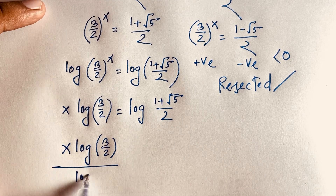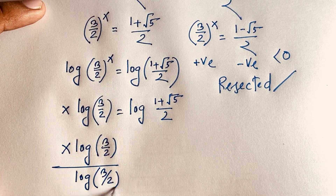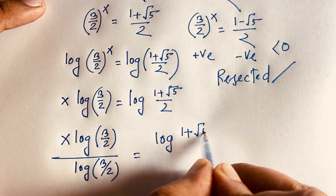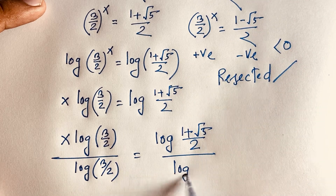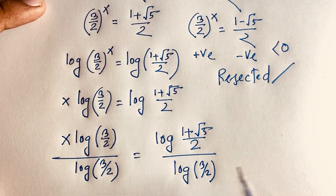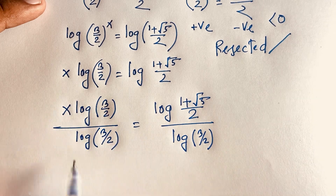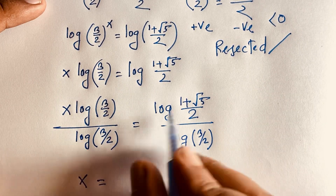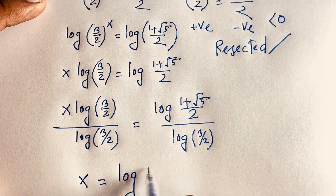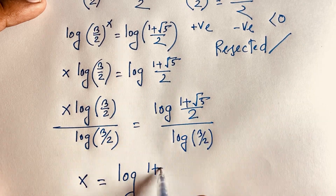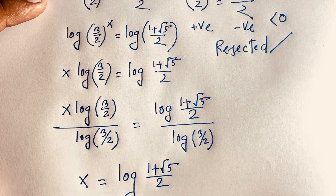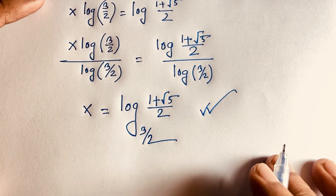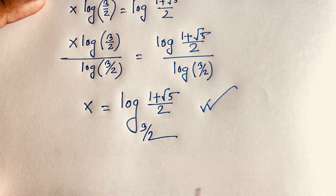Dividing both sides by log(3/2), we get x equals log((1 + √5)/2) divided by log(3/2). Using the change of base rule, this can be written as x equals log base (3/2) of ((1 + √5)/2). This is our final answer in logarithmic form.